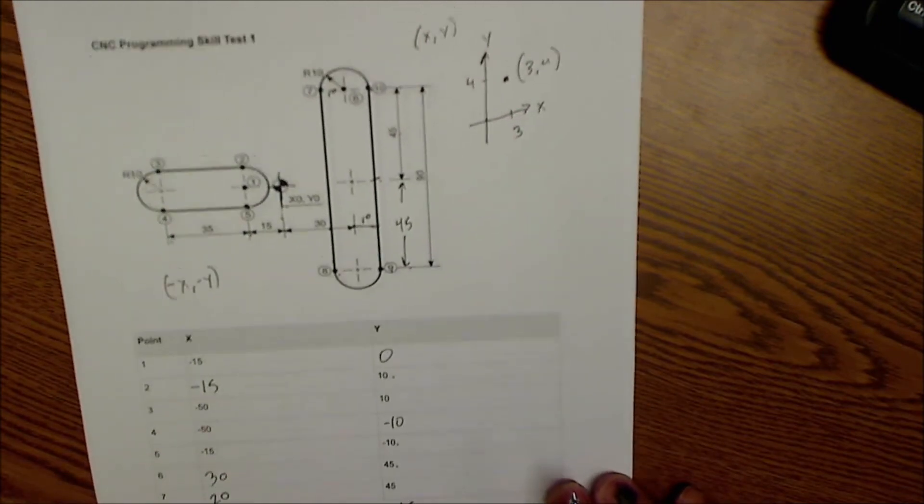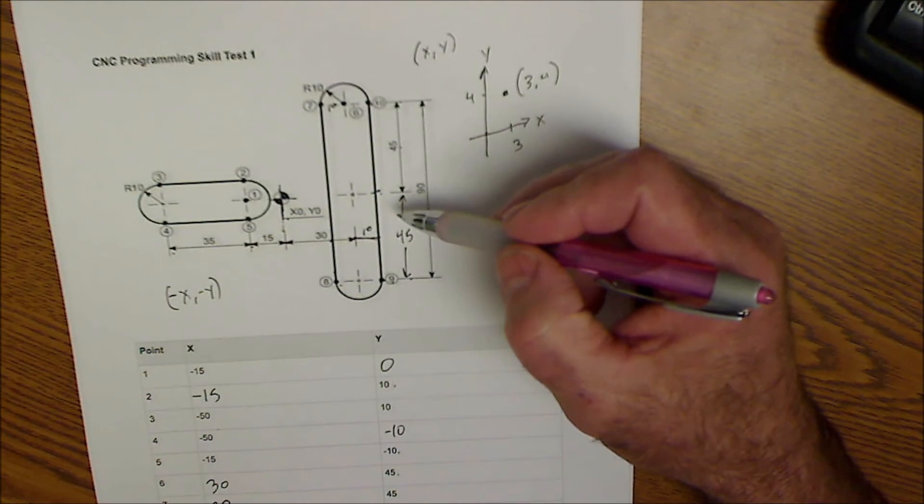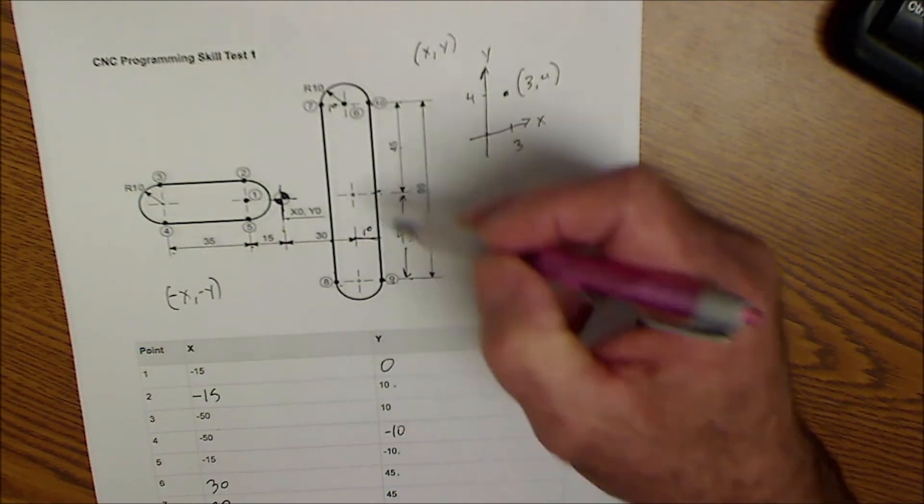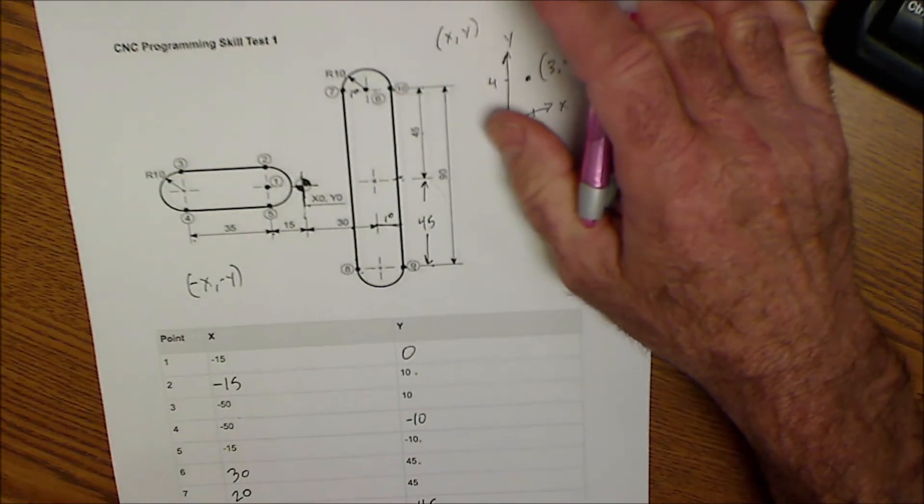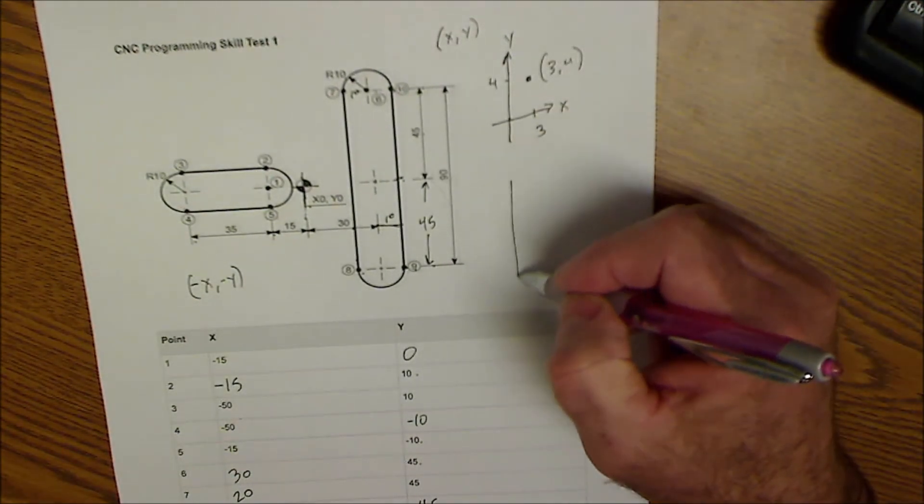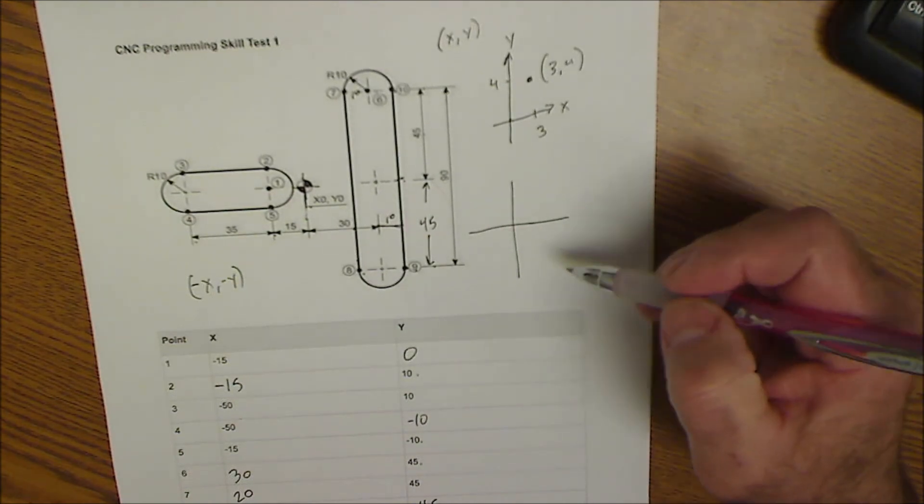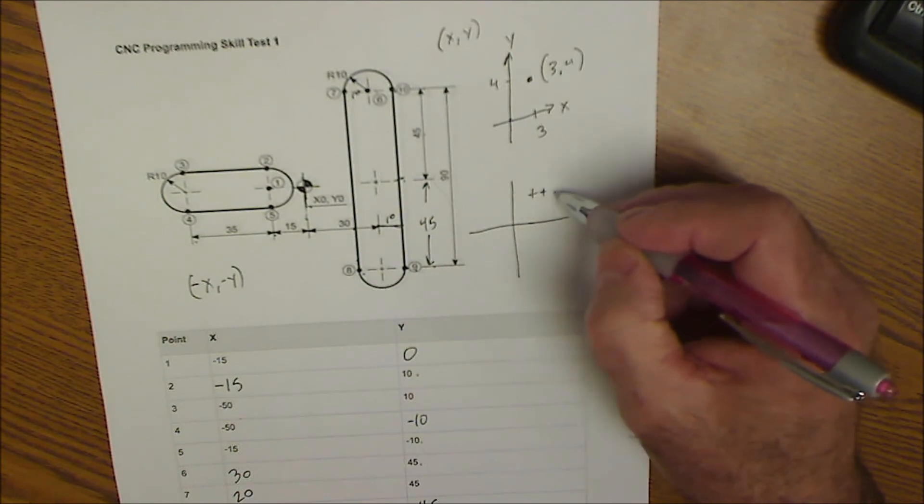So hopefully that helped. The best way to take this test would be to pause it, figure out a value, then watch me figure it out and check your work against mine. This is a CNC programming test based on Cartesian coordinates, and it's a lot about staying positive in the first quadrant.